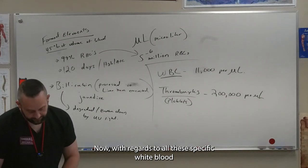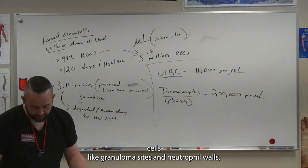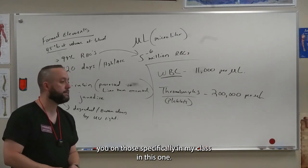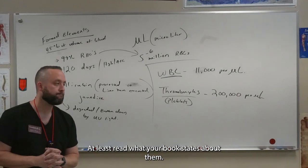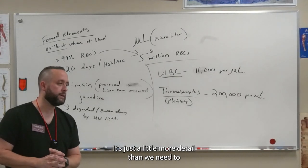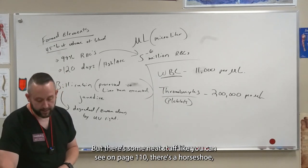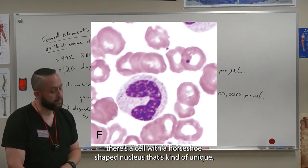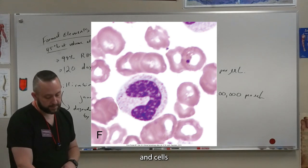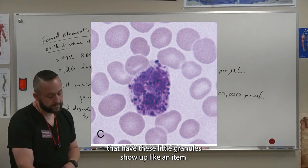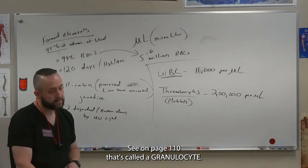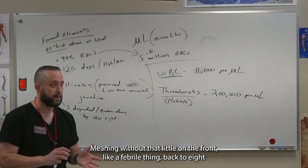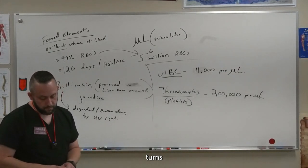Now with regards to all these specific white blood cells, like granulocytes and neutrophils, I'm not going to test you on those specifically in my class. You just want to at least read what your book states about them. It's just a little more detail than we need to cover right this minute. But there's some neat stuff, like you can see on page 110 there's a horseshoe-shaped nucleus that's kind of unique. And cells that have these little granules show up, like in item C on page 110. That's called a granulocyte. They have granules in them. And then there's A-granulocytes, meaning without, that little A on the front, like afebrile.